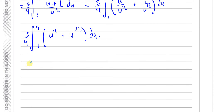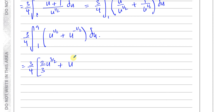Now I integrate: (3/4) times [u to the power of 3/2 divided by 3/2 — which is the same as multiplying by 2/3 — plus u to the power of a half divided by a half, which is multiplying by 2], evaluated between limits 9 and 1.